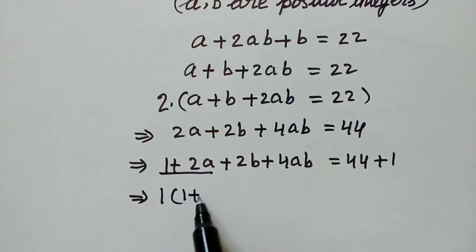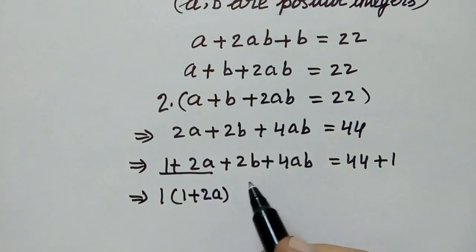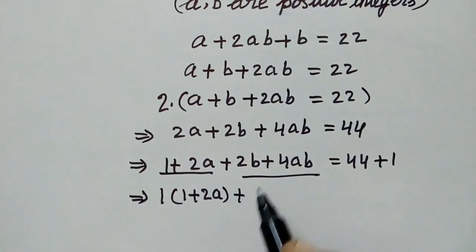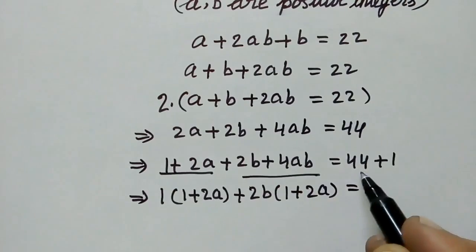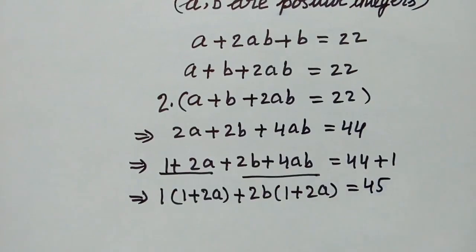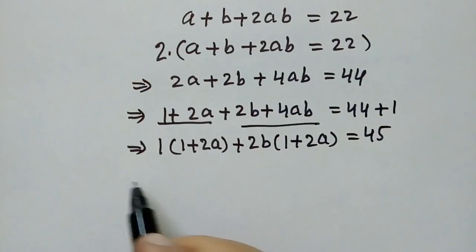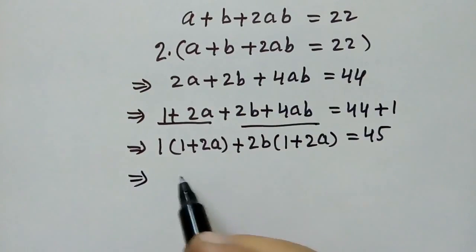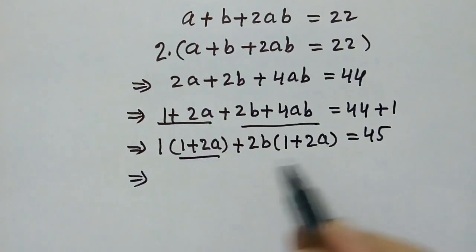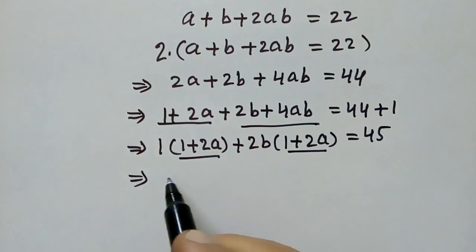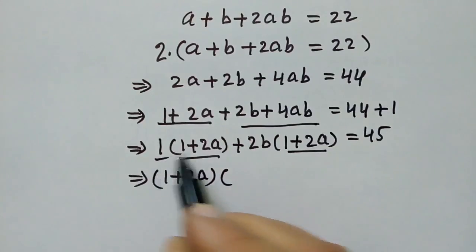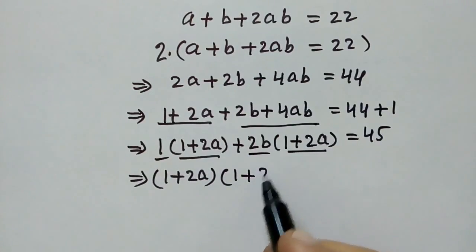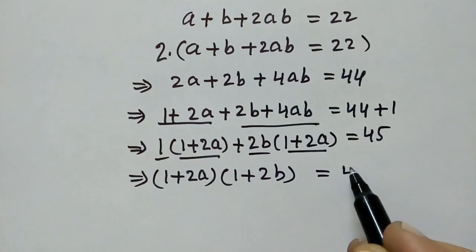1 plus 2a will remain in the bracket. Here we will take 2b as common, so 1 plus 2a remains in the bracket. Taking 1 plus 2a as a common factor, we get (1 plus 2a)(1 plus 2b) is equal to 45.